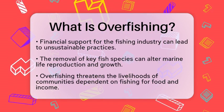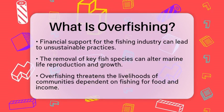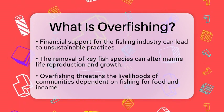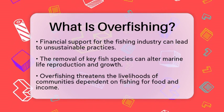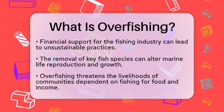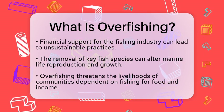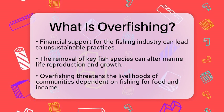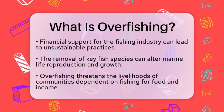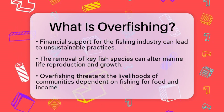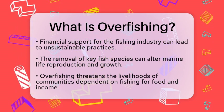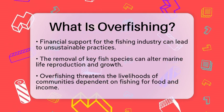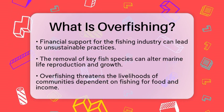The impact of overfishing on ecosystems is significant. Removing key fish species can alter how other marine life reproduces and grows. This can lead to the collapse of entire ecosystems, which not only affects marine life but also threatens the livelihoods of people who rely on fishing for food and income.